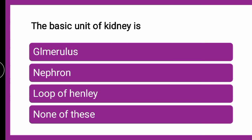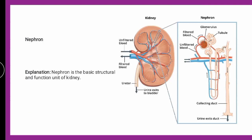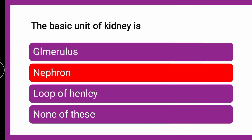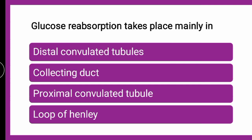The next question is: the basic unit of the kidney is dash — whether it is glomerulus, nephron, loop of Henle, or none of these. The nephron is the basic structural and functional unit of the kidney. The structure of the nephron includes the glomerulus, then PCT, loop of Henle, then DCT, and collecting ducts. So the correct answer is nephron.